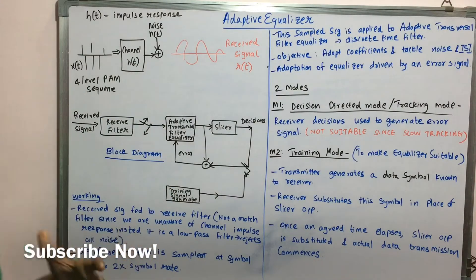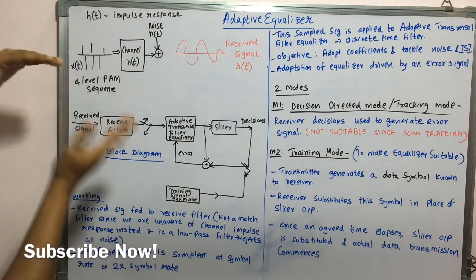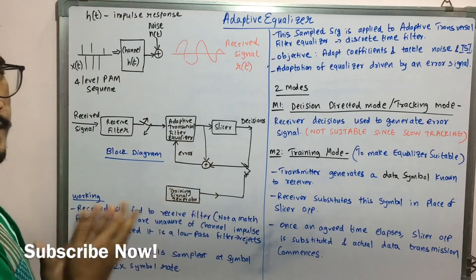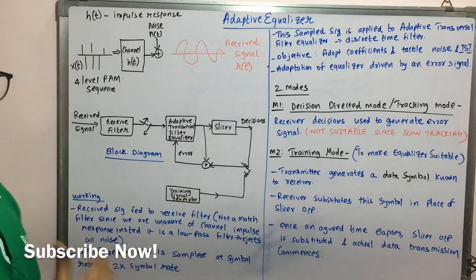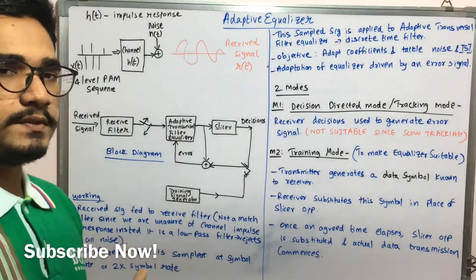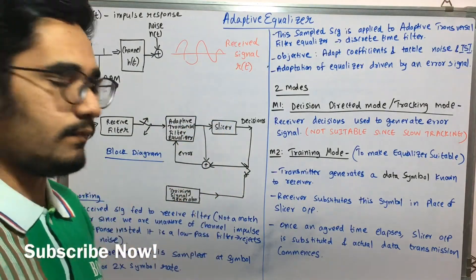So this equalizer is necessarily put at the receiver end. So this is a block diagram of how the adaptive equalizer basically works. So let's understand the working as well as the two modes which are there, which are followed in the adaptive equalizer.